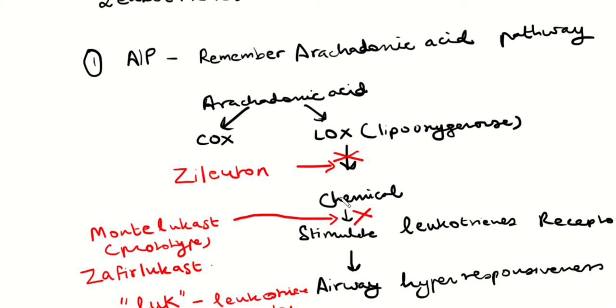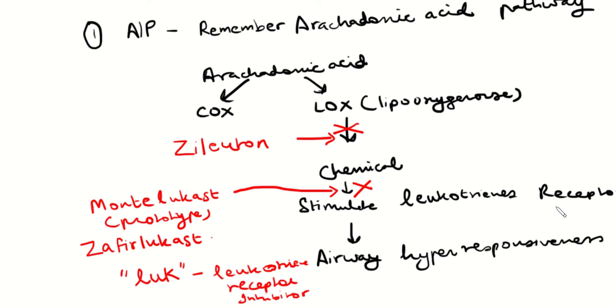It helps convert it to chemicals that then act on leukotrienes receptors. And once they do, the big effect is airway hyperresponsiveness. So the pathway is arachidonic acid, LOX converts it to certain chemicals that stimulate the leukotrienes receptors in the lungs, which cause bronchoconstriction.